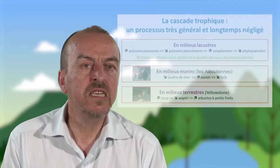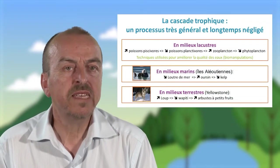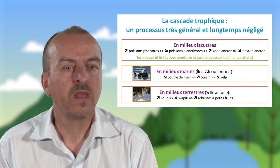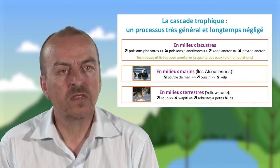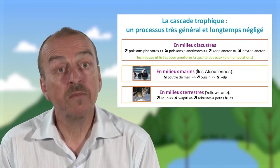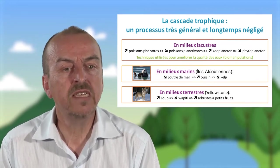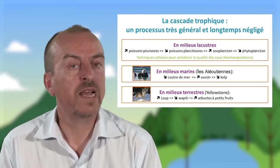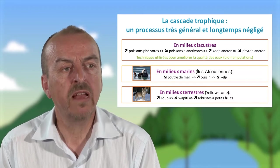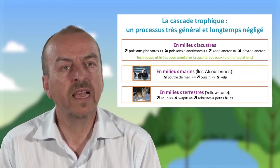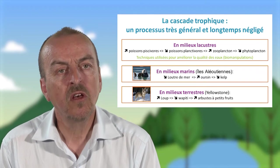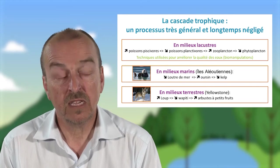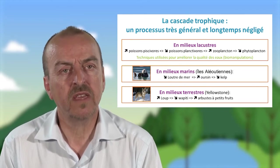Ces cascades trophiques aquatiques existent dans un très grand nombre d'écosystèmes. La cascade trophique, souvent décrite en milieu lacustre, est maintenant utilisée comme technique pour améliorer la qualité des eaux : on parle de biomanipulation. Par exemple, dans un certain nombre de milieux lacustres qui avaient toujours des eaux turbides malgré la réduction des apports en nutriments, on a ajouté des poissons piscivores pour permettre un meilleur contrôle des algues. C'est une technique efficace qui est utilisée.